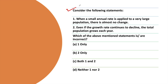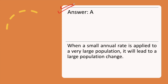The next question: Consider the following statements. Statement 1: When a small annual rate is applied to a very large population, there is almost no change. Statement 2: Even if the growth rate continues to decline, the total population grows each year. Which of the statements are incorrect? The correct answer is option A, with the explanation.